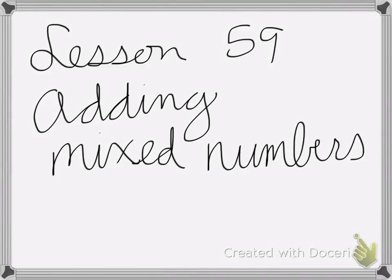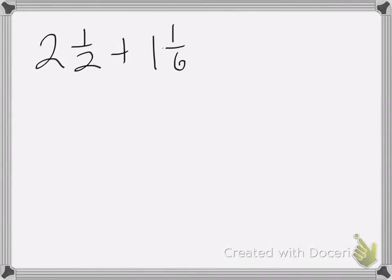All right, so lesson 59 is on adding mixed numbers. So here I have 2½ plus 1⅙, and remember we have three steps with adding fractions, and the first step is to put them in the correct shape. I cannot add these two fractions because the denominators are different, so I first need to make the denominators the same.